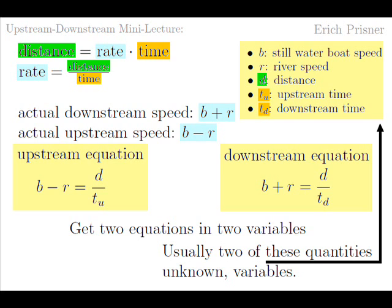Depending on which two quantities are unknown, which are the two variables, and also of course depending on the three constants given, we get different versions of the problem.